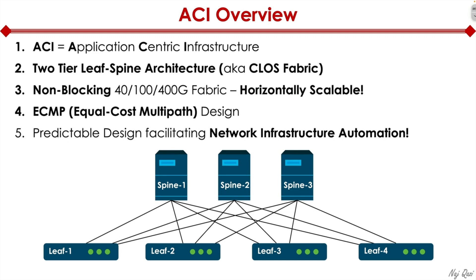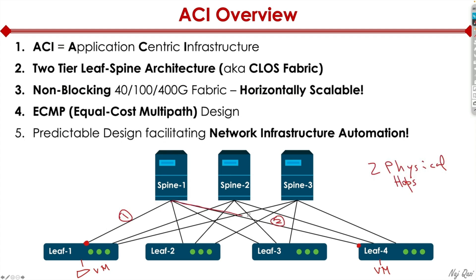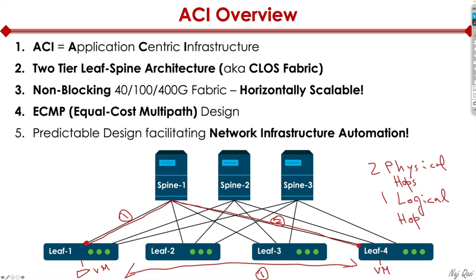That predictability is what facilitates network infrastructure automation. For example, if a VM on leaf 1 wants to talk to a VM on leaf 4, leaf 1 takes a path through a spine down to leaf 4. It can leverage other paths as well, but regardless of which path it takes, it will reach the destination. Each virtual machine is two physical hops away — one hop to the spine, and a second hop to the destination leaf. Logically, using VxLAN overlay technology, those VMs think they're directly connected — one logical hop away, even though they're two physical hops apart.